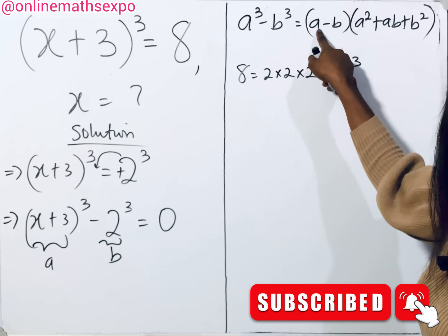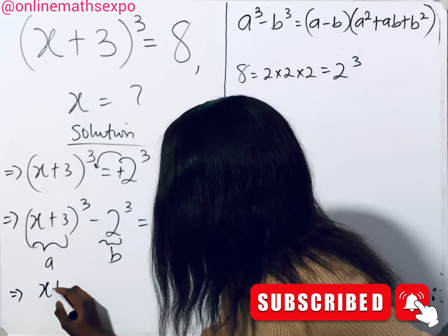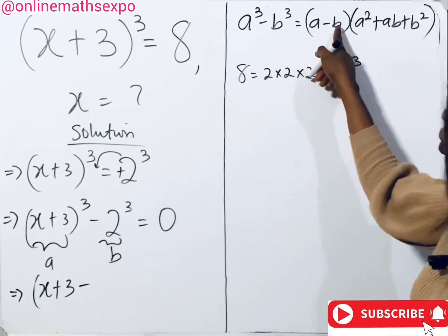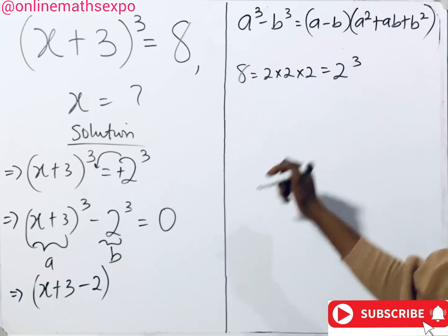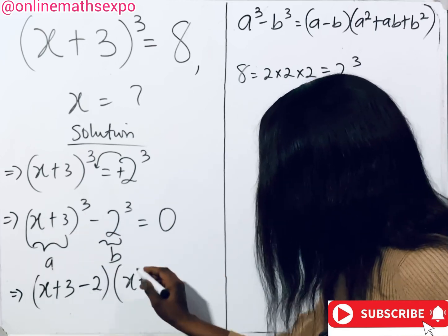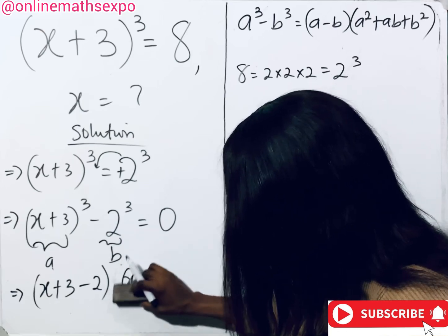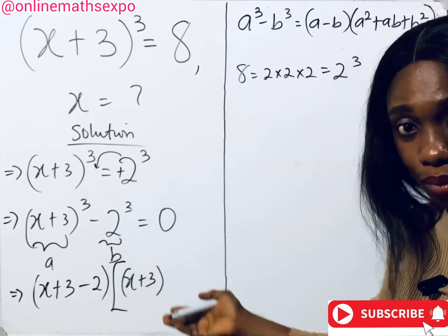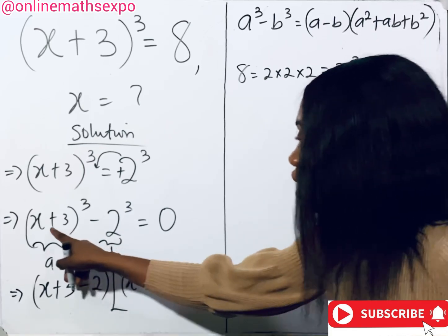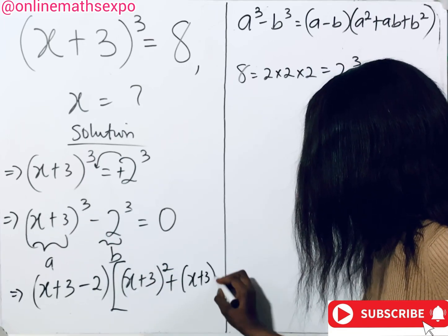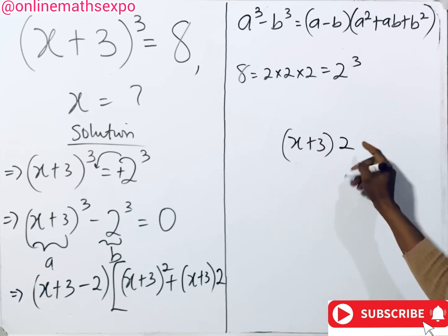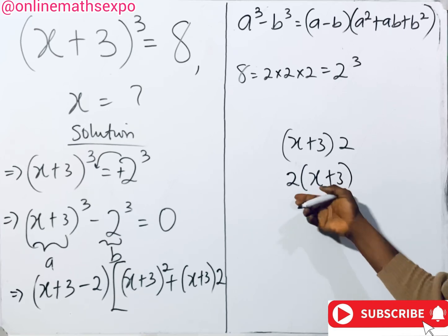Applying the formula, our a is (x + 3), so the first factor is (x + 3 − 2). For the second factor, a² gives us (x + 3)², then we have plus a times b which is (x + 3) multiplied by 2. Note that 2(x + 3) can be rewritten by placing the 2 before the bracket.